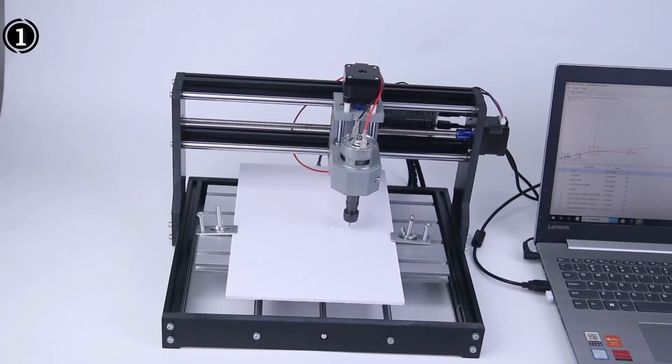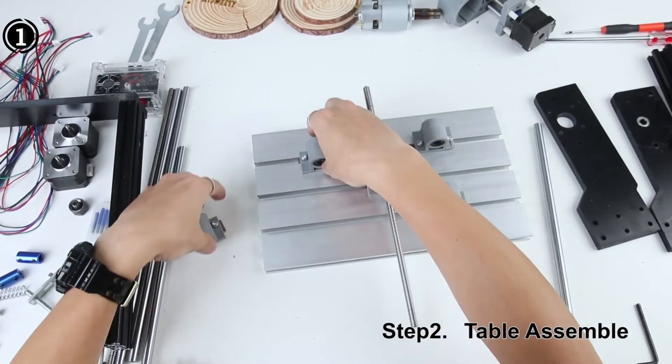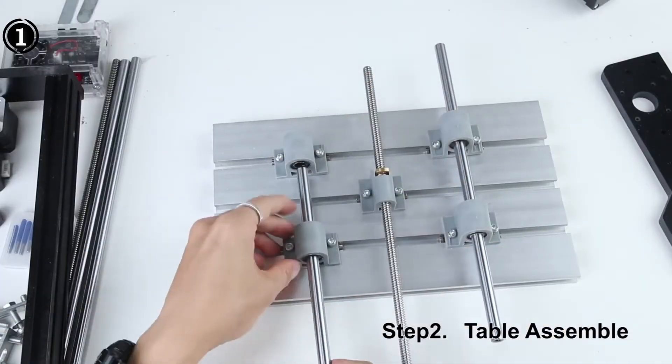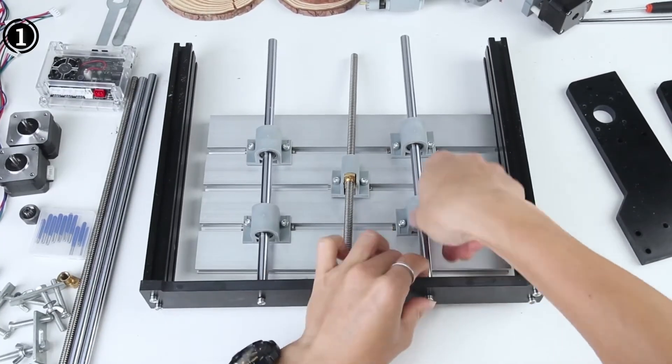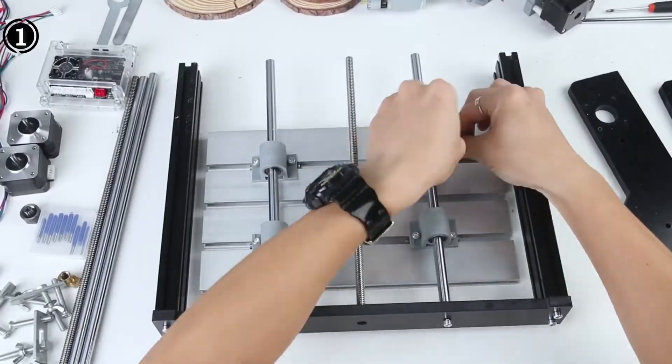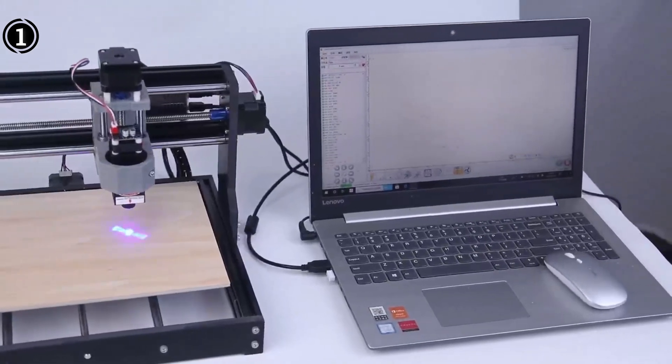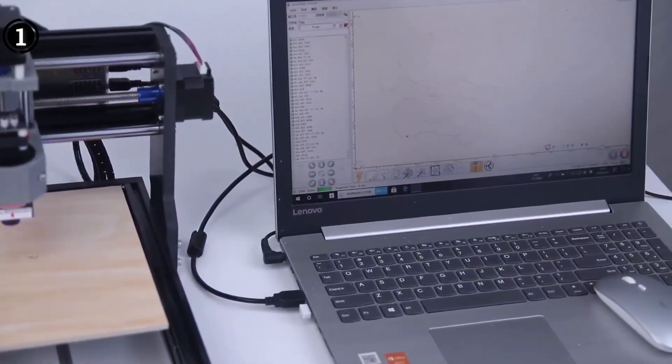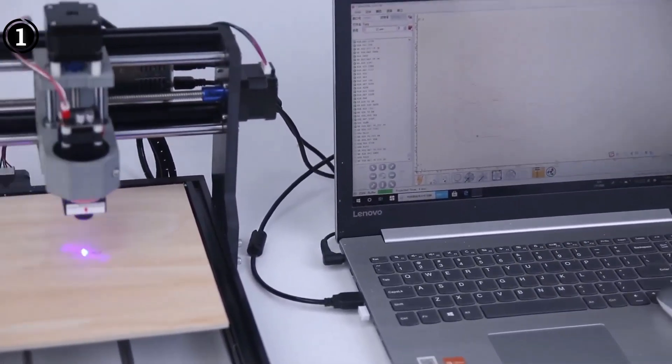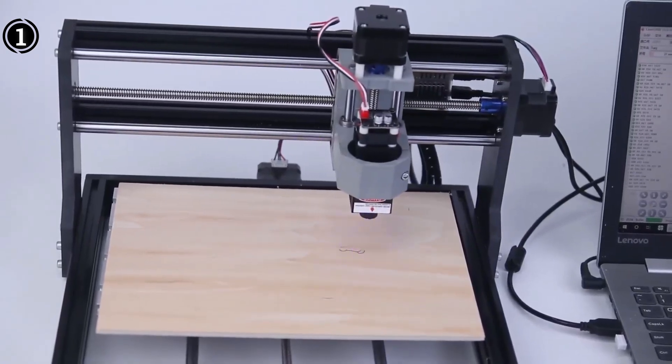The MySuite 2 in 1 5500mW CNC 3018 Pro Package includes a comprehensive set of components: one engraving machine, one 5.5W module, one offline controller, four clamps, 10 bits, and one extension rod with an ER11 collet. Additionally, your purchase comes with the peace of mind of a generous 2-year warranty.